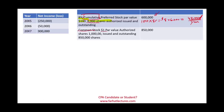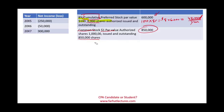We also have common stock with a $1 par value. There are 1 million authorized shares, of which 850,000 are issued and outstanding, giving us $850,000 for common stock. The stockholders' equity would normally include additional paid-in capital, which we assume we don't have here. We are given net income for years 20x5, 20x6, and 20x7, from which we will derive retained earnings.